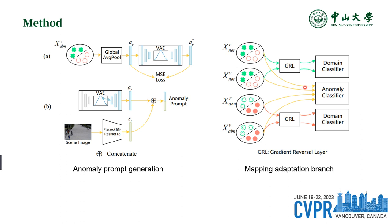For the mapping adaptation, a domain classifier and an anomaly classifier are used. The anomaly classifier separates mapped features from normal features in the same scene to make the generated features scene-specific. The domain classifier extracts common features across different domains and ignores domain-specific differences such as the viewpoint of the camera.